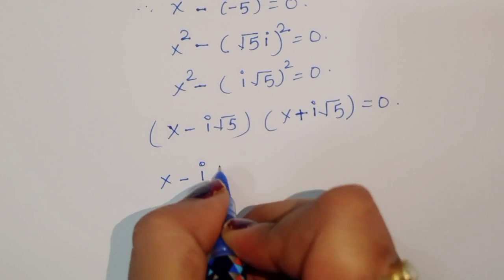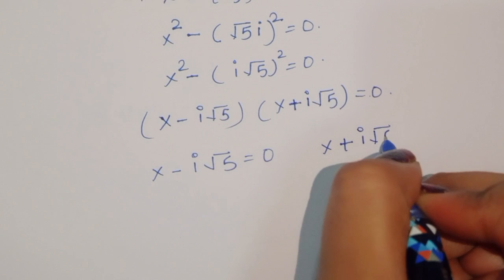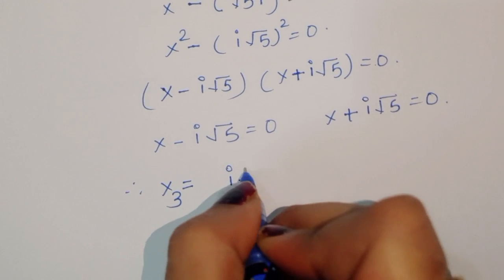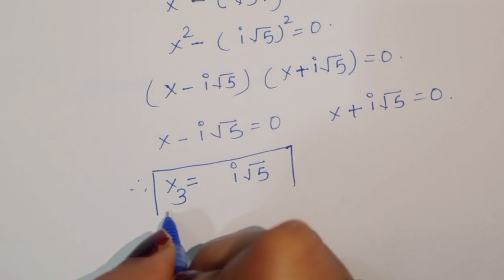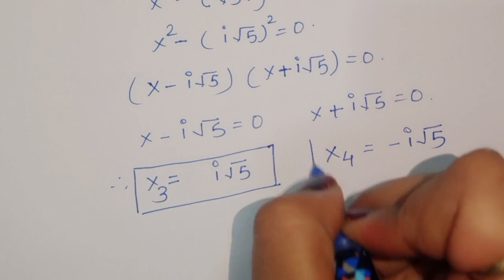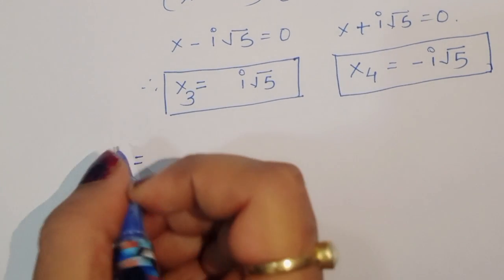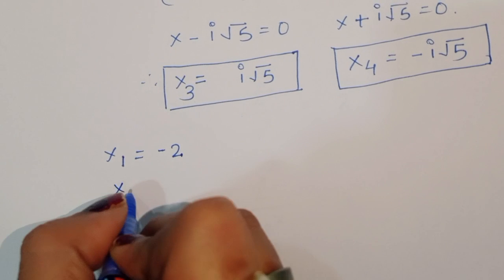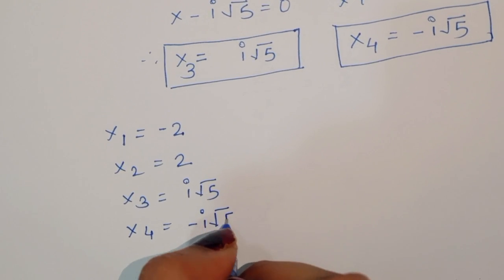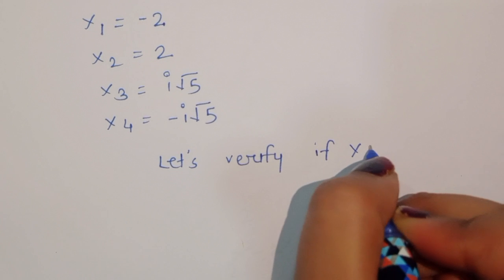From x - i√5 = 0, we get x₃ = i√5, and from x + i√5 = 0, we get x₄ = -i√5. So we have four solutions: x₁ = -2, x₂ = 2, x₃ = i√5, and x₄ = -i√5.